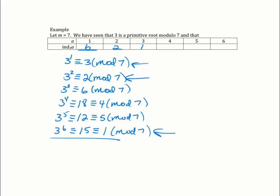Then for 4: what power did I raise 3 to to get 4? The power is 4. What power did I raise 3 to to get 5? Here's my 5, and I raised 3 to the fifth power to get 5. What power did I raise 3 to to get 6? 3 cubed gave us 6.